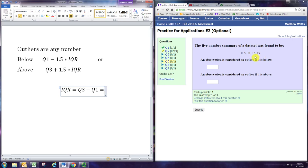So for this problem, the third quartile is 16, and the first quartile is 5. Subtracting, we get the interquartile range is 11.